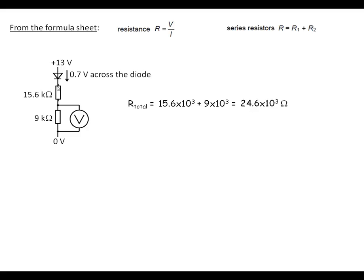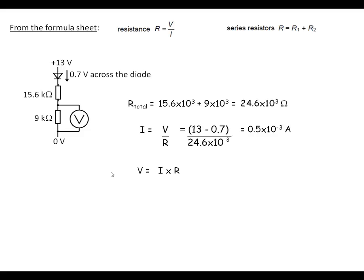Now what we can do — we know the total resistance there and we also know the voltage across these as well — so we can work out the current flowing through. The voltage across the whole lot is 13 volts minus the 0.7 volts from the diode, and then we divide by the total resistance. So that's 13 volts minus 0.7 divided by the total resistance, and that comes out as half a milliamp. Then we do the same as we did in the first example. We know the size of the resistance and we know the size of the current. So V equals IR — multiply these out — and we end up with 4.5 volts across that resistor there.